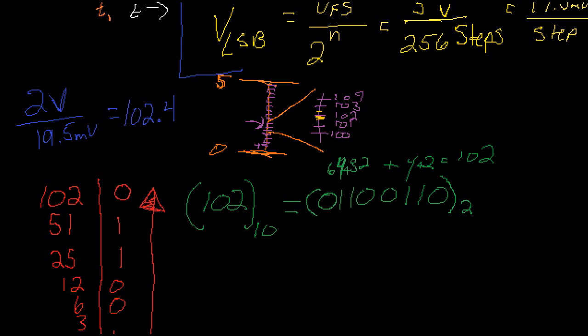We take our binary number, convert it to base 10, which is 102, and multiply that by our VLSB, which is 19.5 millivolts.